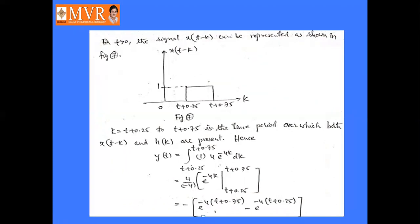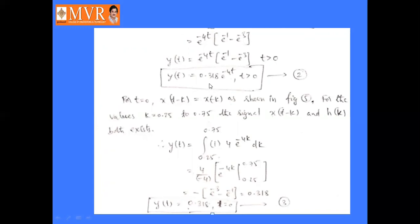For t > 0: x(t−k) and h(k) overlap from k = t + 0.25 to k = t + 0.75. So y(t) = ∫ from (t+0.25) to (t+0.75) of 4·e^(−4k) dk = [4/(−4)] · e^(−4k) from (t+0.25) to (t+0.75). Substituting gives y(t) = 0.318·e^(−4t) for t > 0. This is equation (2).